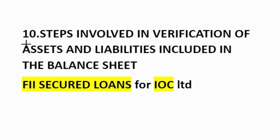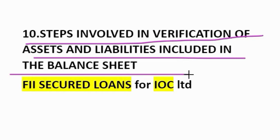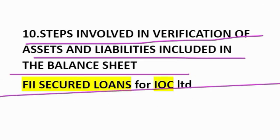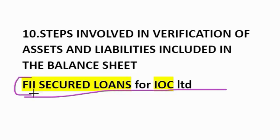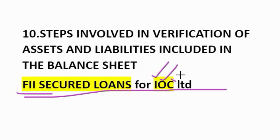Tenth question: steps involved in verification of assets and liabilities included in the balance sheet. How to remember? FII secured loans for IOC Limited — FII meaning foreign institutional investors. F — fixed assets. I — inventory. Another I — investments. Next — secured loans. Then IOC: I for insurance, O for other liabilities, C for contingent liability. So FII secured loans for IOC Limited. Tenth question completed.